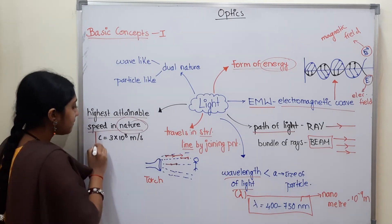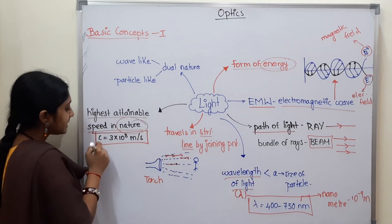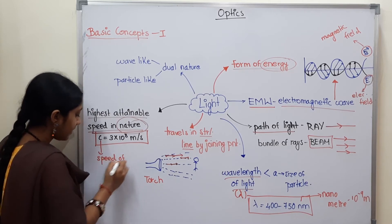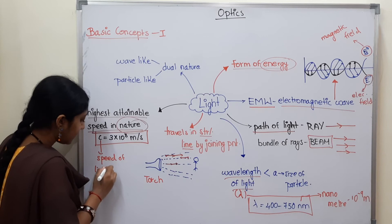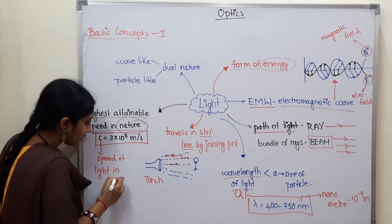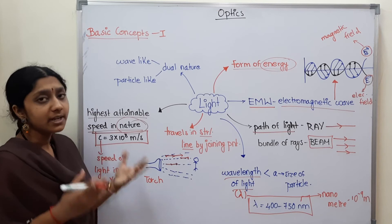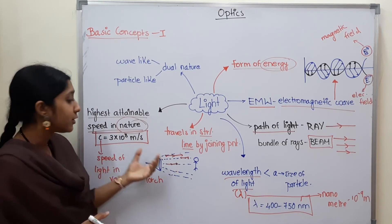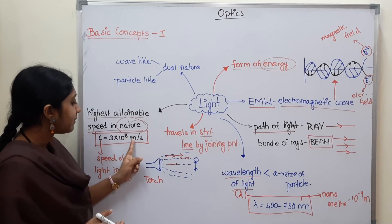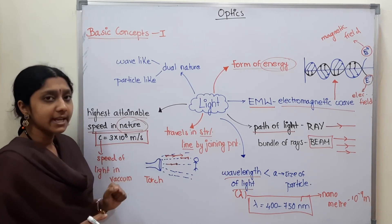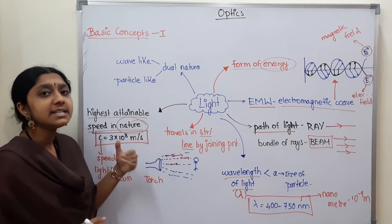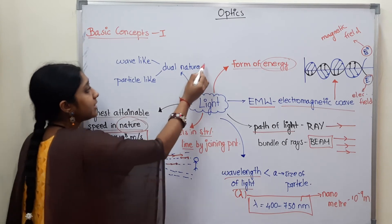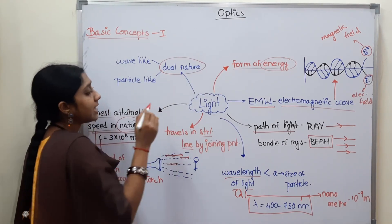So we say light years is the highest attainable speed in nature. So in nature there is light in nature. That value is very very important. c is equal to - c is nothing but speed of light in vacuum. Vacuum is nothing - not any region. So in vacuum the speed of light is 3 into 10 power 8 meter per second. Speed is meter per second unit. This is the highest attainable speed of light.